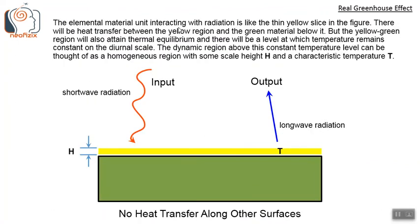The elemental material unit interacting with the radiation is like a thin yellow slice in the figure. There will be heat transfer between the yellow region and the green material below it. The yellow and green region will attain thermal equilibrium, and there will be a level or depth at which the temperature remains constant on the diurnal scale. The dynamic region above this constant temperature level can be represented as a homogeneous region with some characteristic scale height h and temperature T — like a boundary layer which interacts with the radiation.